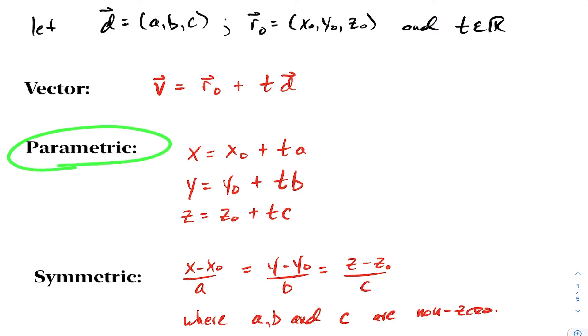Likewise with parametric form, if you're in R3 you now have a third coordinate z0 plus t times c in this case. Moving on to our new form here, symmetric form.